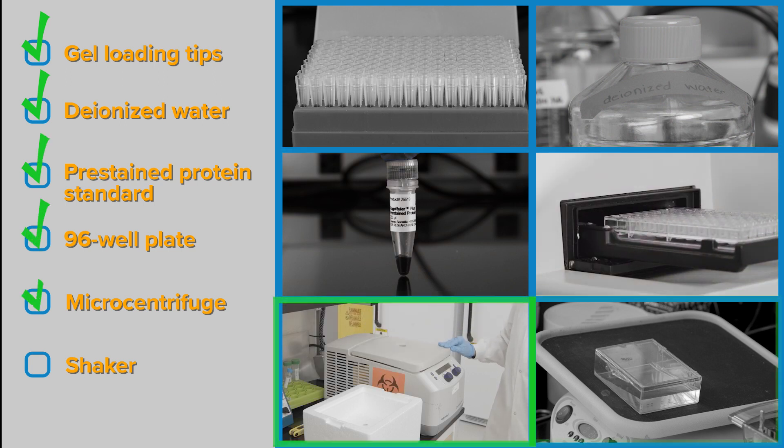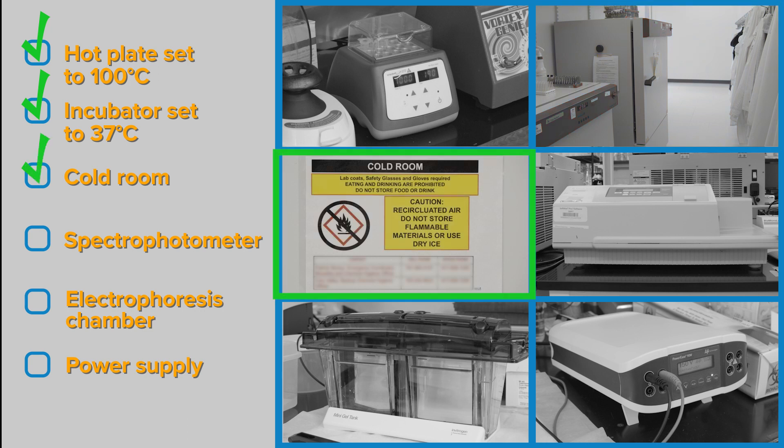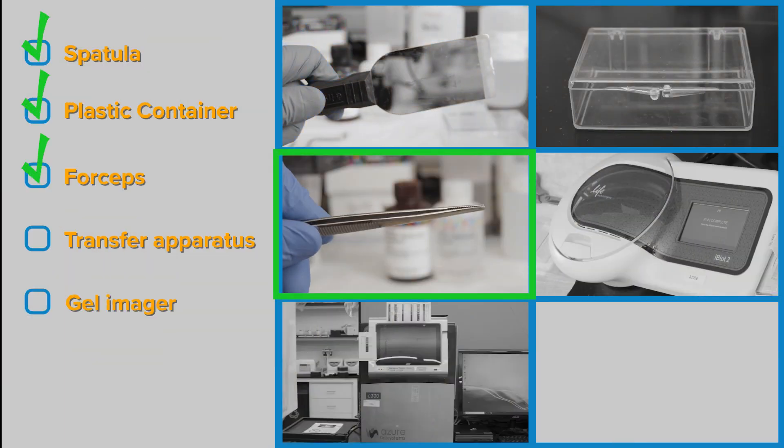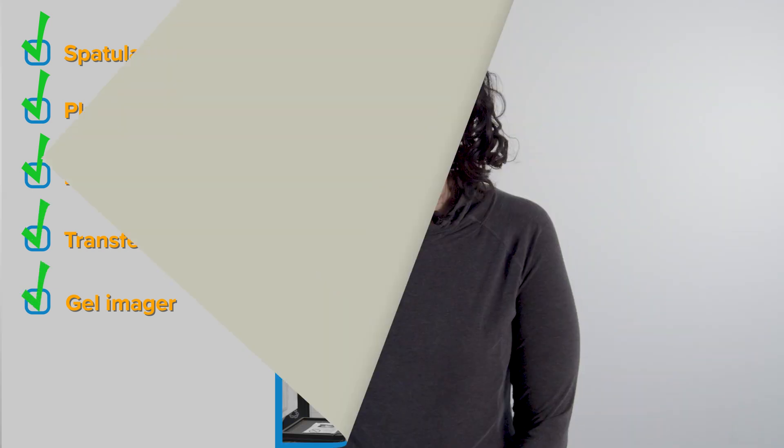Microcentrifuge, Shaker, Hot Plate Set to 100 degrees Celsius, Incubator Set to 37 degrees Celsius, Cold Room, Spectrophotometer, Electrophoresis Chamber, Power Supply, Spatula, Plastic Container, Forceps, Transfer Apparatus, Gel Imager. Whew, got everything? Great. That brings us to the big question, how do we run a Western?